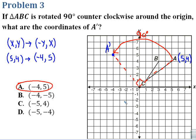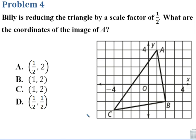I'd recommend plot things out just to see if you're doing them correctly. In problem 4, we have Billy is reducing the triangle by a scale factor of 1 half. What are the coordinates of the image of A again?